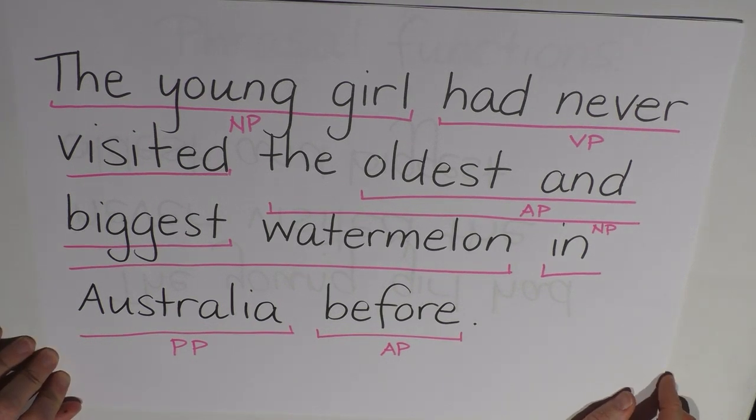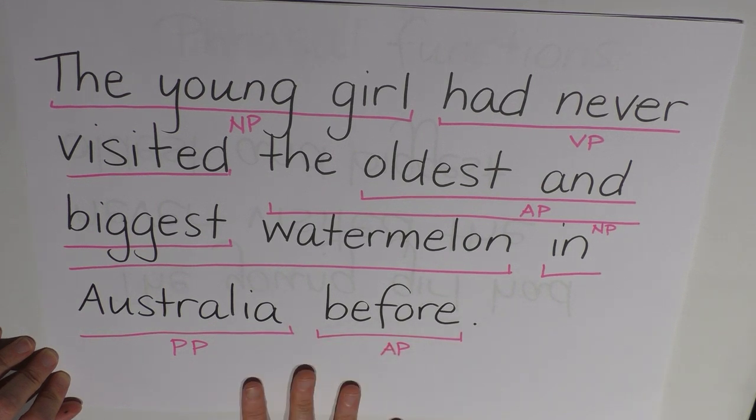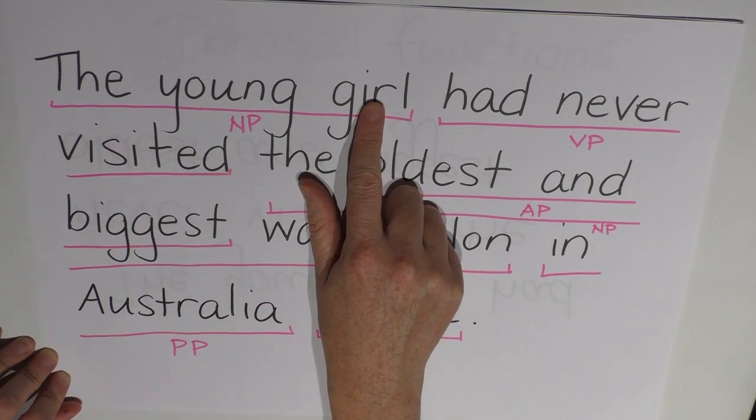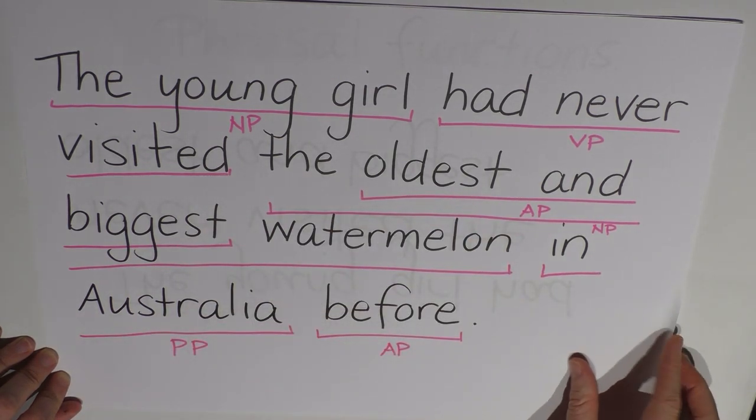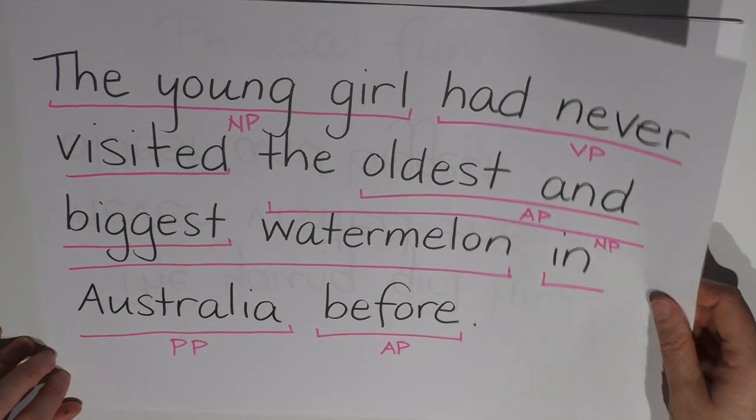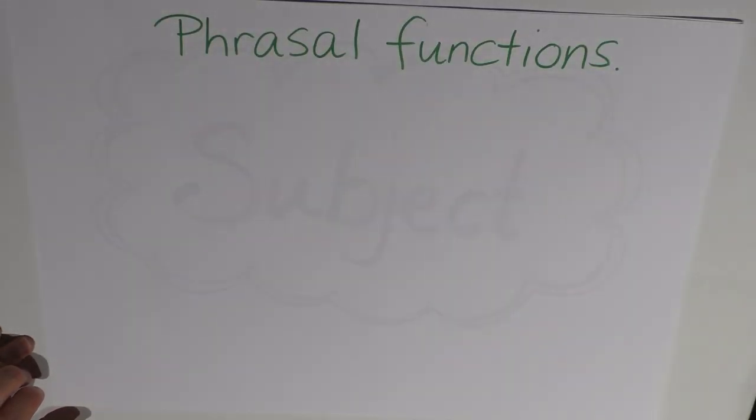Alright, so each of the phrases in this sentence also have a function and the function of a phrase is different to its phrasal category. The function of the phrases in the sentence help us to figure out what the sentence means. So in this sentence for example we know that we are talking about the young girl and we are talking about her and her experiences or lack thereof. So we know this because of the function. Now the grammatical labels for these different functions are the following.